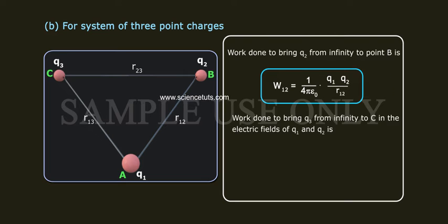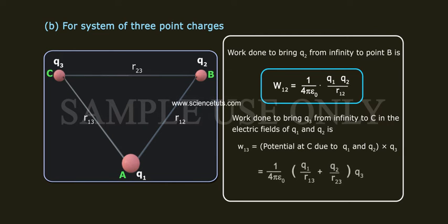Work done to bring Q3 from infinity to C in the electric fields of Q1 and Q2 is W13 equals potential at C due to Q1 and Q2 into Q3, equals 1 by 4 pi epsilon naught of Q1 by R13 plus Q2 by R23 into Q3.